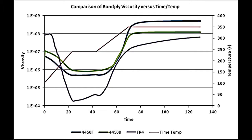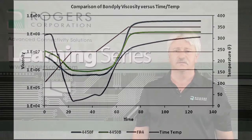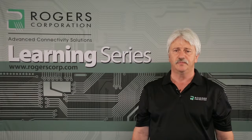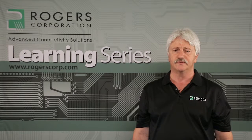This chart shows the minimum melt viscosity on the Y-axis of RO4450B and RO4450F prepregs to be nearly two orders of magnitude higher than a traditional FR4 type prepreg when tested using the same thermal profile. The minimum melt viscosity would indicate the FR4 materials are capable of very significant lateral flow during a multilayer bonding process.